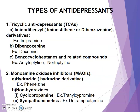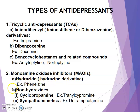Types of antidepressants: First, tricyclic antidepressants — iminodibenzene derivatives, that is iminostilbene or dibenzazepine derivatives, for example imipramine; dibenzoxepine derivatives, for example doxepin; and benzocycloheptanes, for example amitriptyline and nortriptyline. Second class: monoamine oxidase inhibitors, divided into hydrazide derivatives, for example phenelzine, and non-hydrazides including cyclopropylamines, for example tranylcypromine, and sympathomimetics, for example dextroamphetamine.